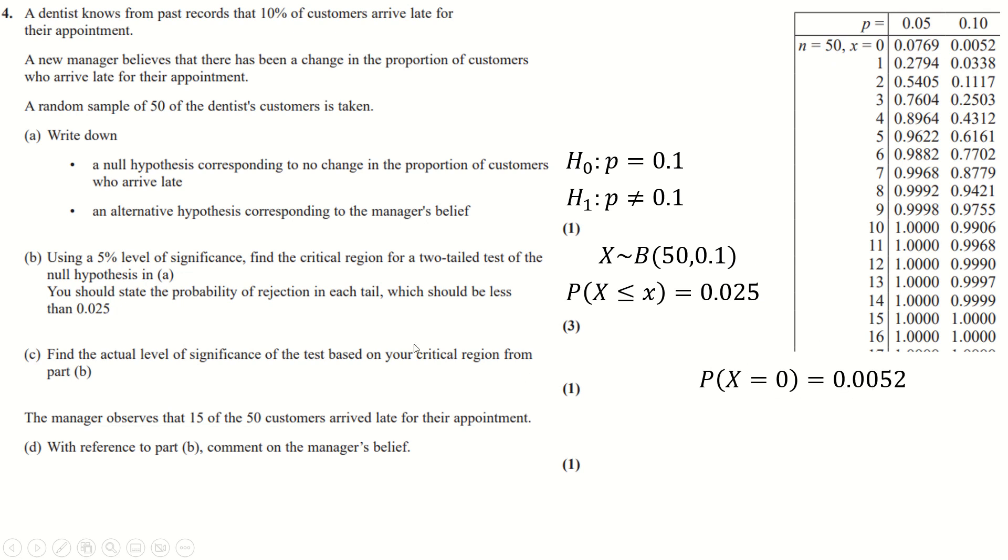And so a critical region is going to be x equals 0 on one side, and on the other side, one minus this is 0.975. And we can see from here the probability of being less than or equal to 9 is that, which means the probability of being greater than or equal to 10 is one minus that. And that's within the critical region. So x is greater than or equal to 10, and x equals 0 are going to be our critical regions on each end. And the actual level of significance is just this number plus this number.